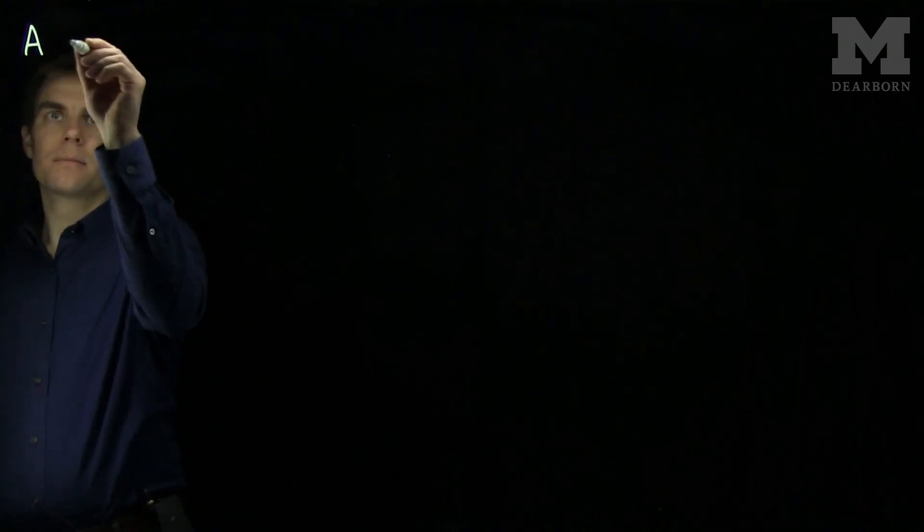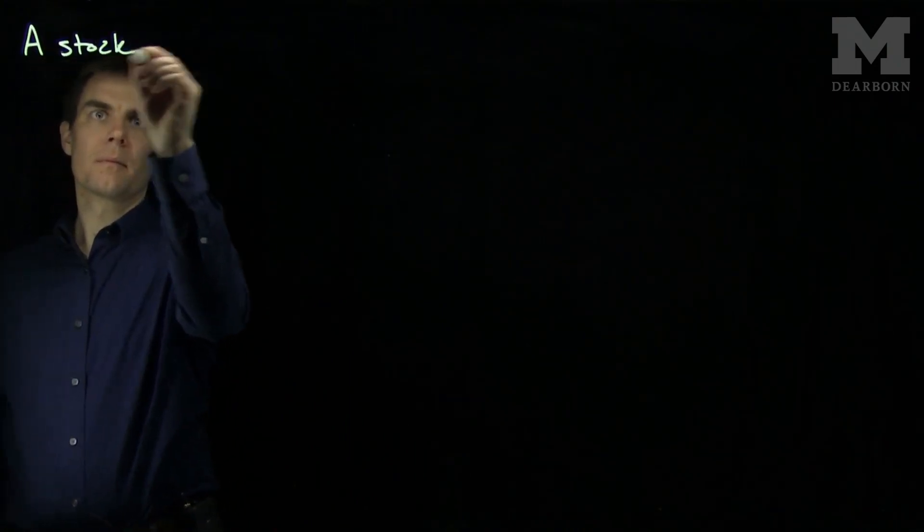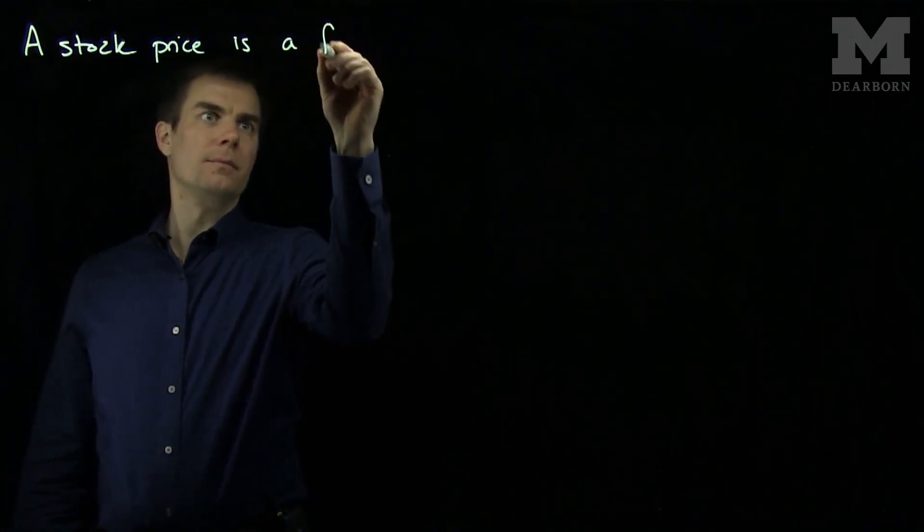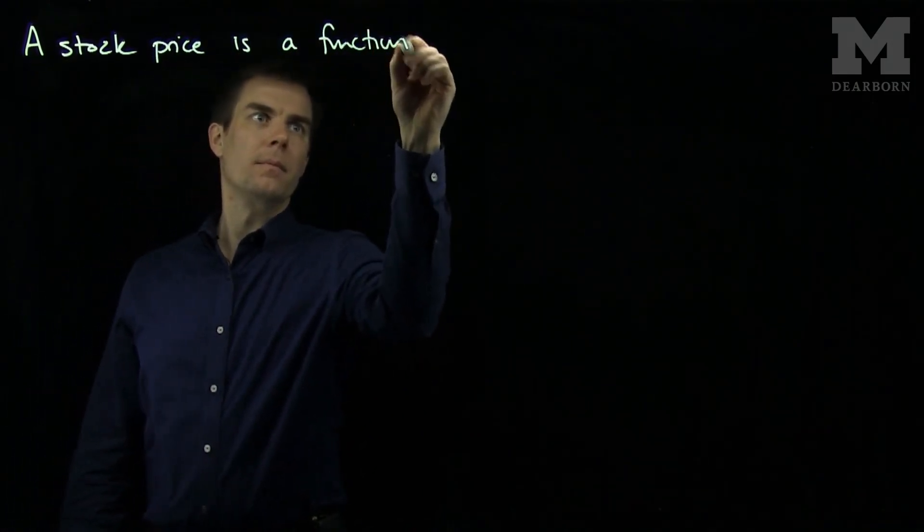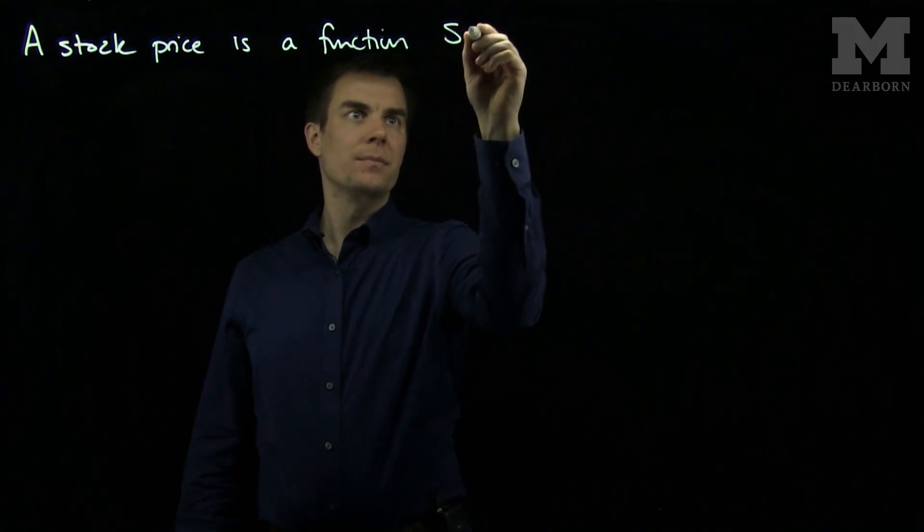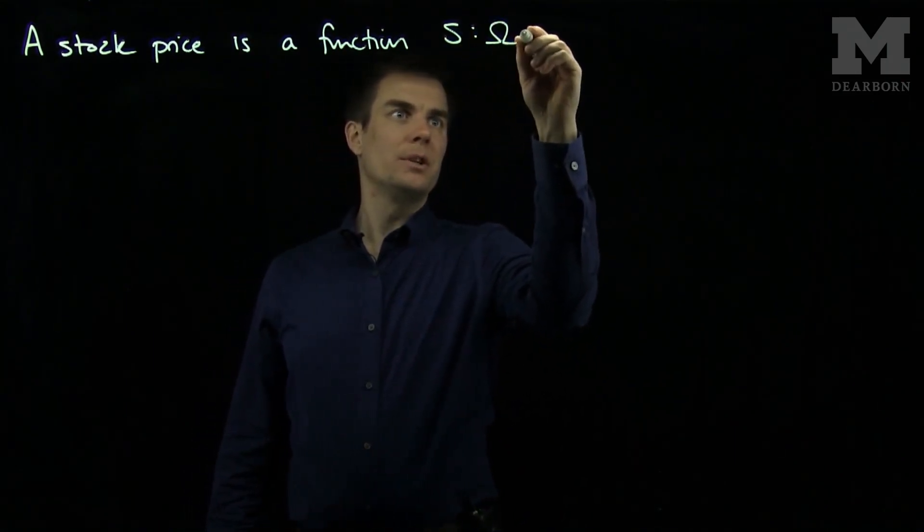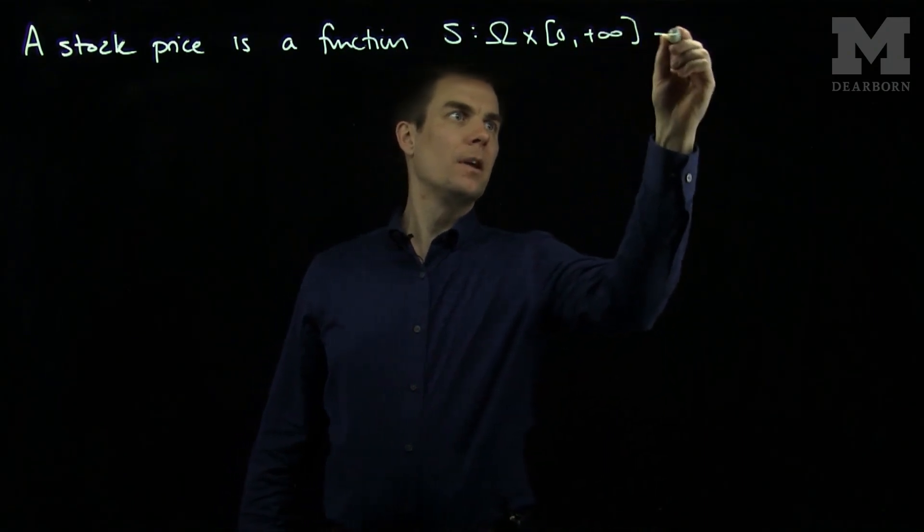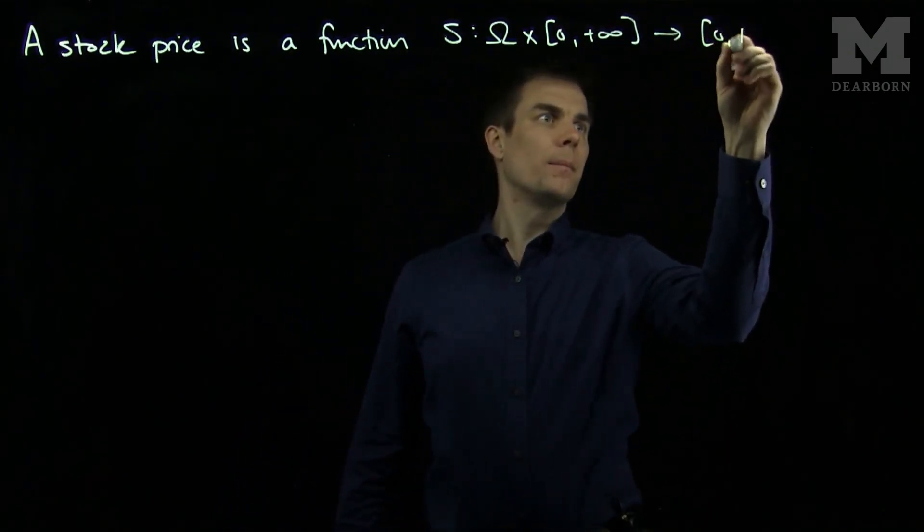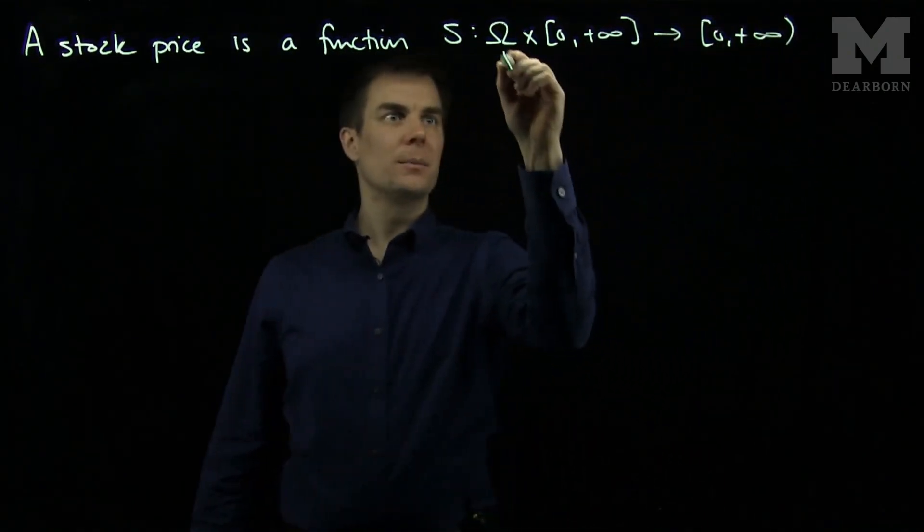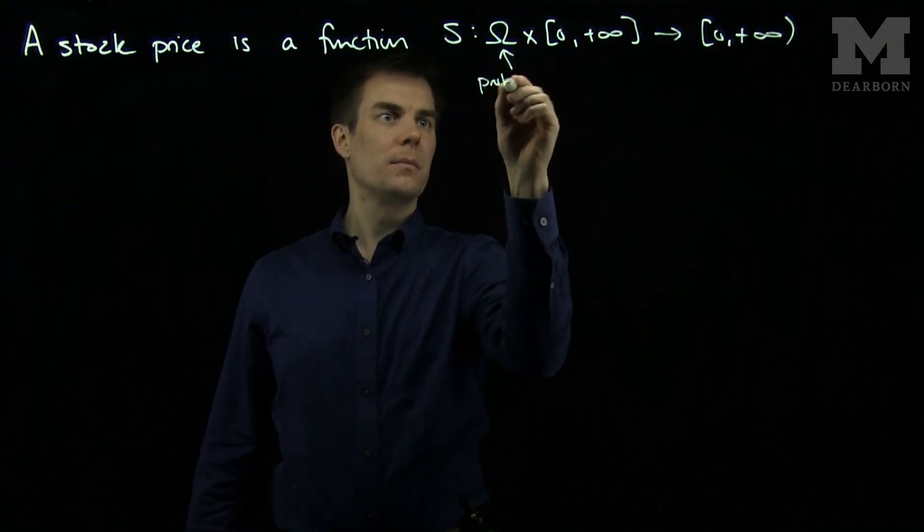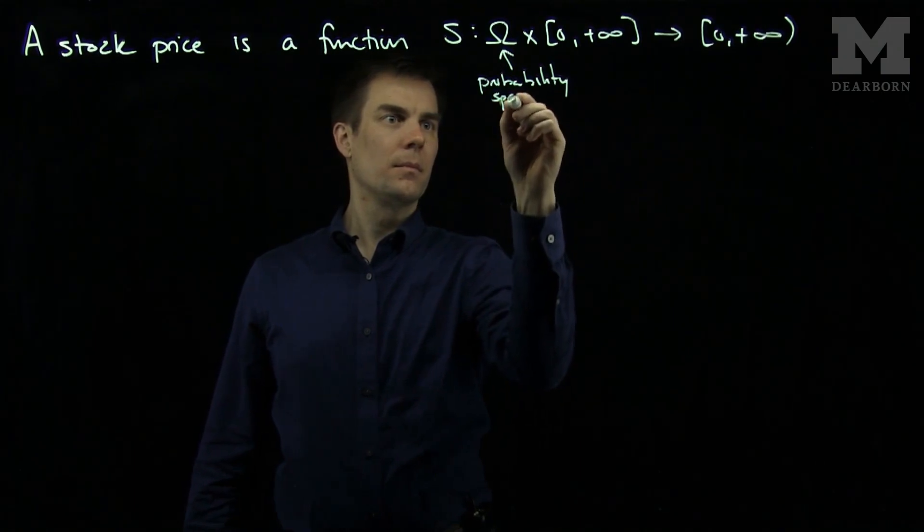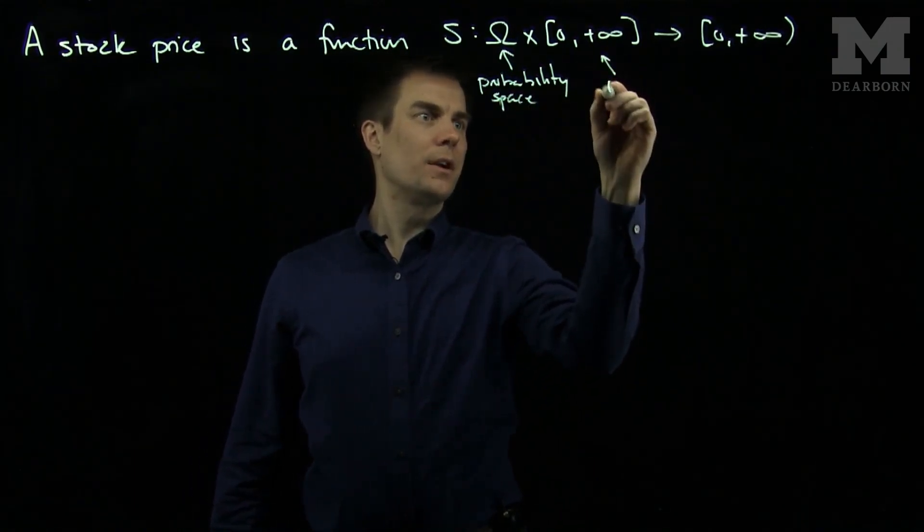A stock price is a function S which maps a probability space Omega cross time into a positive real number.